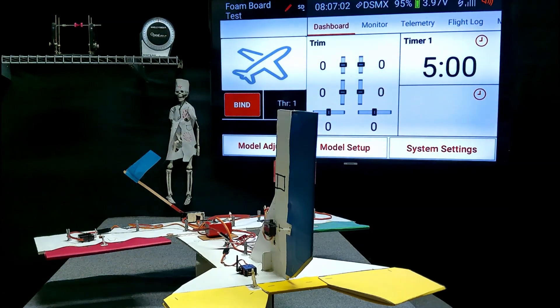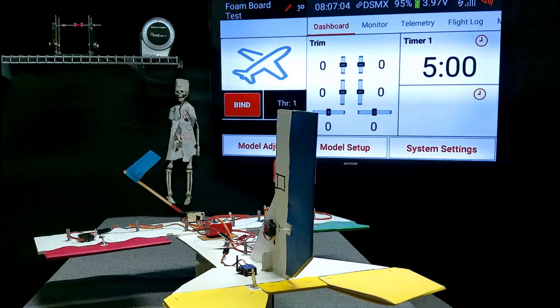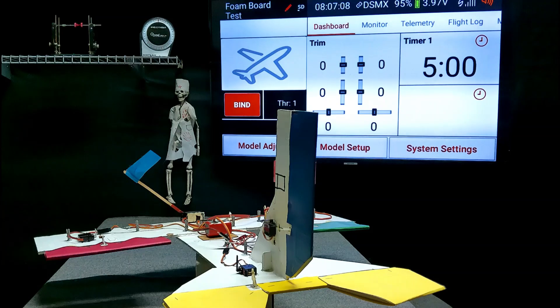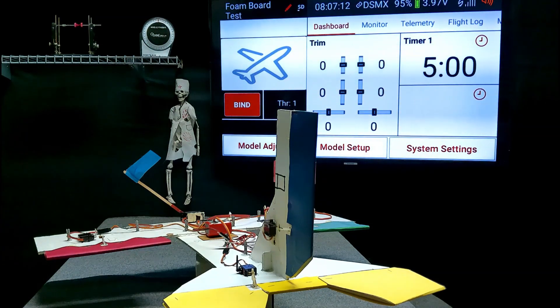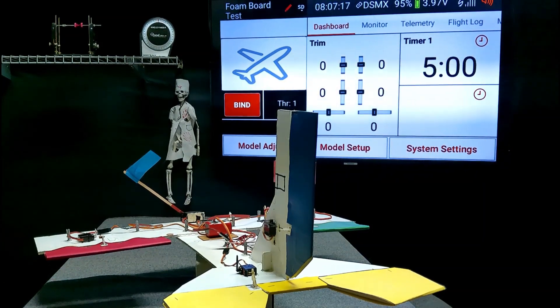In the first video we set up the receiver, we mounted it correctly, we bound it to the transmitter, and inside Forward Programming we set the correct receiver orientation.